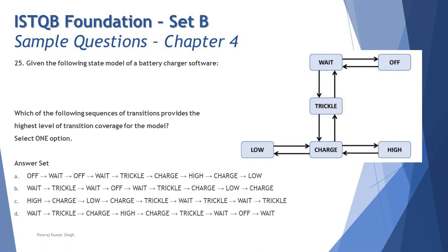The question is which of these given paths covers the maximum number of transitions out of 10? Let's start counting. Path A: Off to Wait covers one transition, Wait to Off covers the second one, then again Off to Wait. Now that's where people go wrong. The moment it repeats the same path, is that a different transition? No. Off to Wait is getting repeated, so it's just two transitions out of 10, not three, because the transition is still the same. Then you say Wait to Trickle (3), Trickle to Charge (4), Charge to High (5), High to Charge (6), Charge to Low (7). So out of 10, the first path covers only seven transitions.